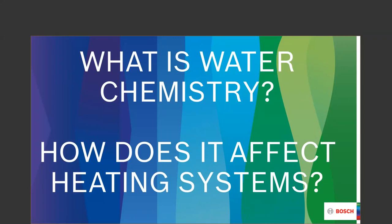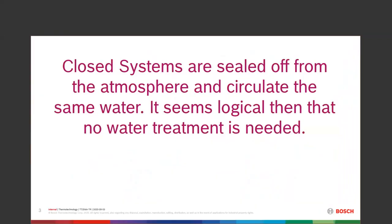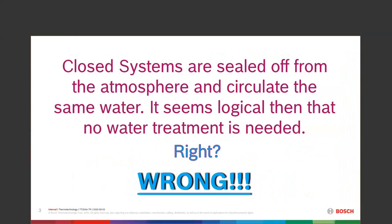What's a closed system? A closed system is sealed off from the atmosphere — it circulates the same water. So it seems logical that we don't need any water treatment, right? Wrong. We need water treatment of some sort, be it chemical, be it through pressures, be it through starting with perfect water. We need to maintain that.